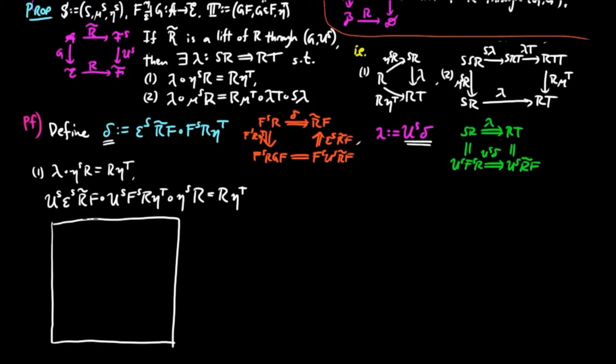The left-hand expression has the following string diagram representation. We have r followed by eta s, then eta t followed by r fs u s, and f r tilde epsilon s u s.